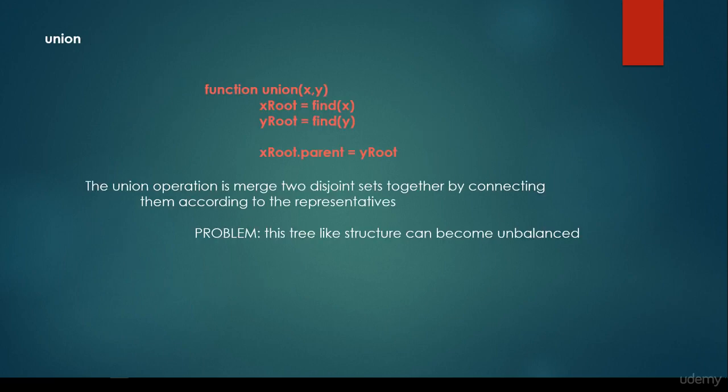What about the union? We have union(x, y), and basically we are going to find the root for x, the root for y, and merge them together. So x_root.parent is going to be y_root. The union operation merges two disjoint sets together by connecting them according to the representatives.